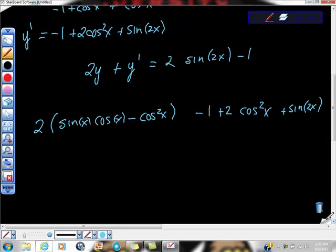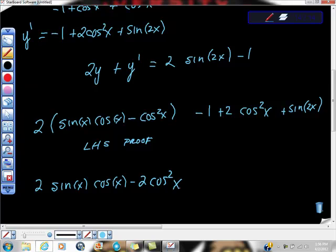Now, if you don't mind, remember that we had a right side. I'm just going to turn this into a left-hand proof. I'm going to turn it into a left-side proof. So 2 sine x cosine x minus 2 cosine squared x minus 1 plus 2 cosine squared x plus sine 2x. That's just our left-hand side. Elsa's still good, right?